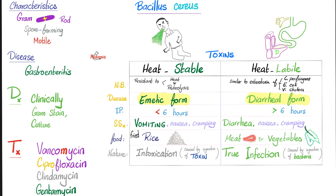For the emetic form, after you ate the fried rice, there was a pre-formed toxin, so it took less time. Medicine makes so much sense once you understand what you're talking about. Is gastroenteritis the only disease caused by Bacillus cereus? No. You also have endophthalmitis or panophthalmitis — an ocular infection, usually after trauma. Moreover, sepsis related to IV catheters or IV drug use, and in very rare cases, severe pneumonia, similar to the one caused by anthrax.